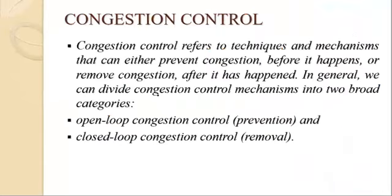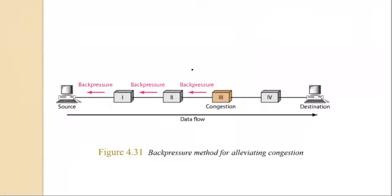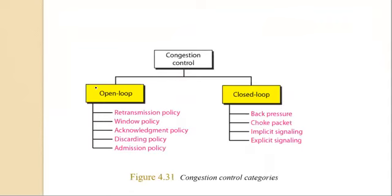Congestion control refers to techniques and mechanisms that can either prevent congestion before it happens or remove congestion after it has happened. We divide congestion control mechanisms into two categories: open loop congestion control, which prevents congestion before it happens, and closed loop congestion control, which is the removal of congestion after it occurs.